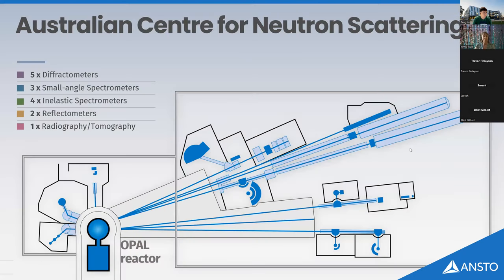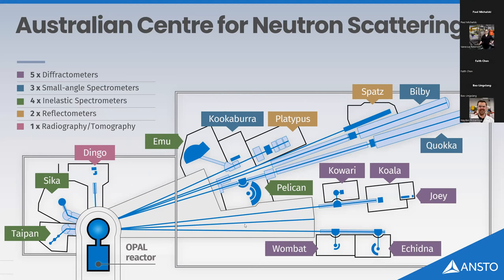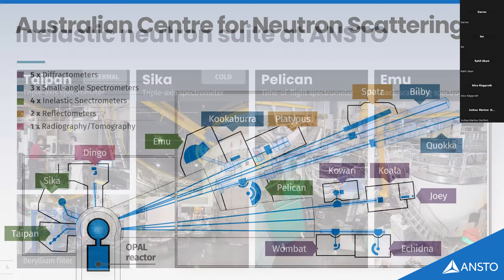This is the Australian Centre for Neutron Scattering. I'm sure you'll all recognize the instruments located around the guide hall and in the reactor beam hall. The instruments we're going to focus on for this lecture series are the ones in green. In the neutron guide hall we have Pelican and EMU, and inside the reactor beam hall, very close to the OPAL reactor for high flux, we have Taipan and Sika, our two triple axis spectrometers.